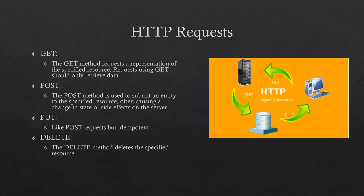Now we'll go into the specific request types. Most of these are self-descriptive but there are some slight nuances. First we have GET — the GET request essentially tries to get a representation of a specific resource; in layman's terms, it just gets data that you want from a server or database. The POST request is somewhat the opposite — it's used to submit or post an entity to a specified resource, to change data in a resource or to create a new resource altogether.